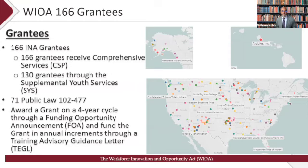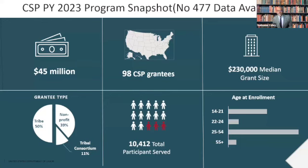We award a funding announcement every four years, but we also put out annual guidance on how to implement the program, which we call Training Advisory Guidance Letters — similar to other programs under the Workforce Innovation and Opportunity Act, like the National Farmworkers program. As a snapshot of our program outcomes: we award about $60 million a year, about $45 million of which we track for performance outcomes. We have about a 98% comprehensive services program which can serve both adults and youth.